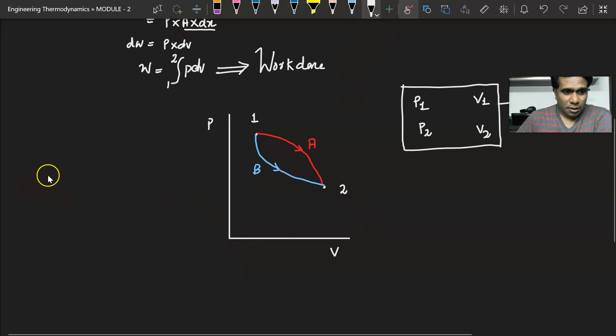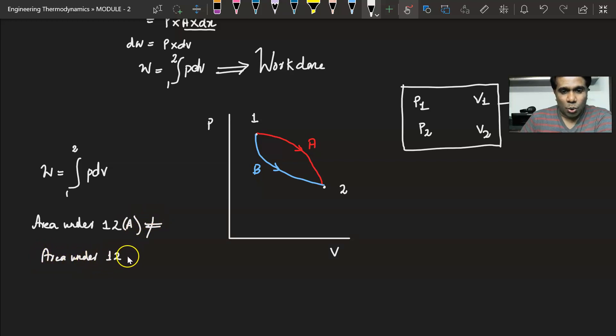To find the work done, we have the equation integral P dV, and integral P dV, that means it is the area under the curve. Now you can see that the area under the curve 1 to 2 represented by A is not equal to the area under 1 to 2 which is along B. That means the work done is a path function.